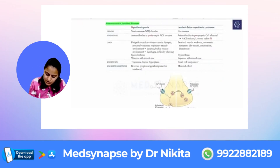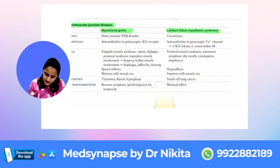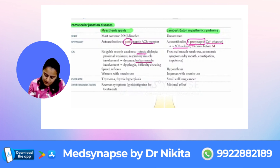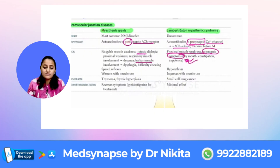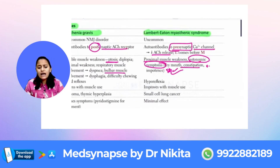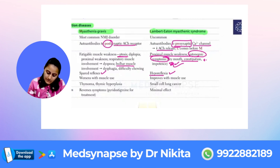Let's compare the neuromuscular junction diseases — myasthenia gravis and Lambert-Eaton syndrome. Myasthenia gravis is more common clinically; the antibodies are against the post-synaptic acetylcholine receptor. In Lambert-Eaton it is the pre-synaptic calcium channel, which decreases acetylcholine release. Clinically, myasthenia has ptosis, bulbar muscle involvement, and difficulty chewing; Lambert-Eaton has proximal muscle weakness and autonomic symptoms like dry mouth and constipation. Reflexes are spared in myasthenia but depressed (hyporeflexia) in Lambert-Eaton.